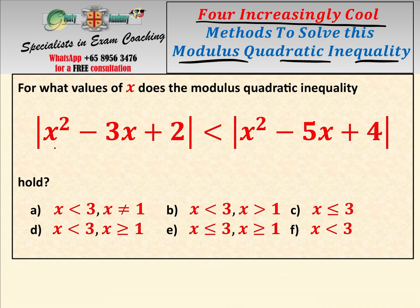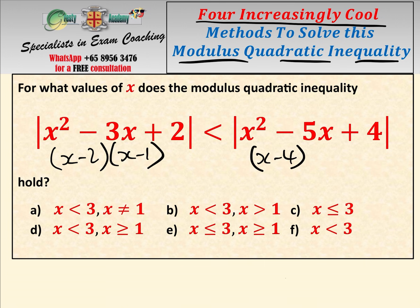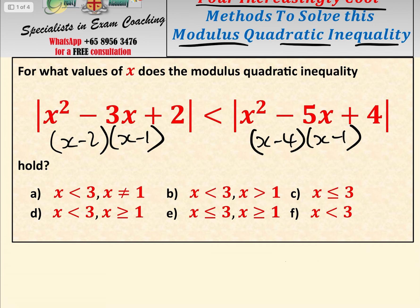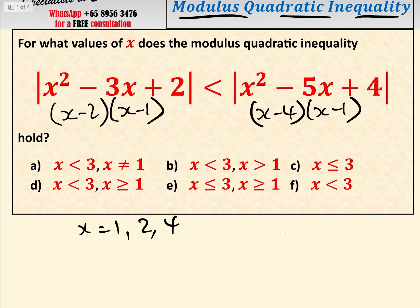First of all, let's factorise these. So x squared minus 3x plus 2 is (x minus 2)(x minus 1), and x squared minus 5x plus 4 is (x minus 4)(x minus 1). Therefore we have critical points at x equals 1, 2, and 4, and these are the ranges and intervals that we have to be very careful about.